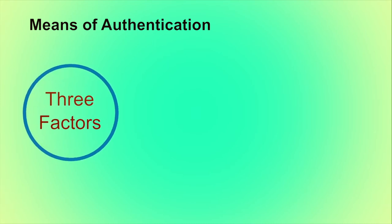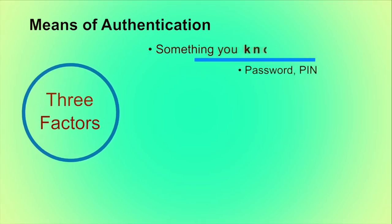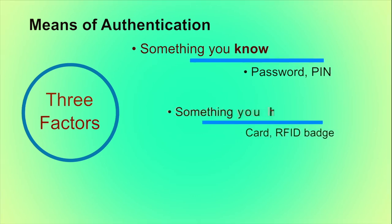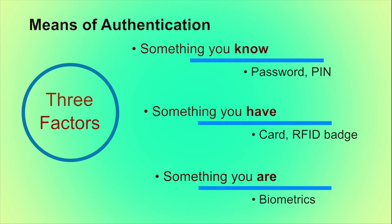What are the means of authentication? Traditionally, there are three means of authentication. First, something you know, like a password or PIN number. Second, something you have, like an ID card or RFID badge. And last, something you are, like biometrics. All of these methods, if properly implemented and used, can provide secure user authentication.